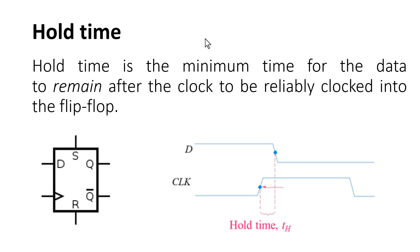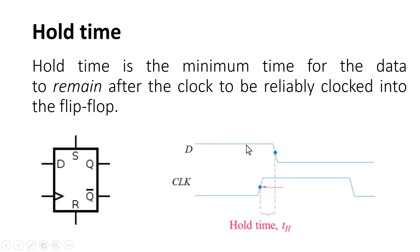Now let us discuss hold time, the fourth important characteristic of a flip-flop. We already know that D must be stable for some minimum time before the clock edge — that is setup time. Additionally, we need to hold the value of D for some minimum time after the clock edge so that it can reliably pass to Q. This minimum time after the clock edge is called hold time. Violating hold time will also cause the flip-flop to enter a metastable state.